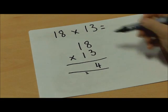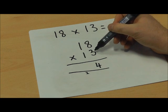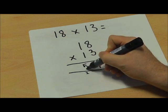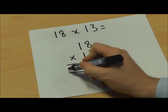I've written 24 like that. Now I'm going to do 1 multiplied by 3 which is 3 plus the 2 which equals 5. So my first part is 54.